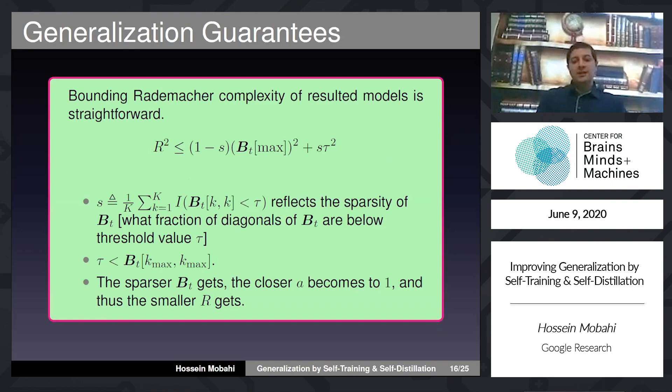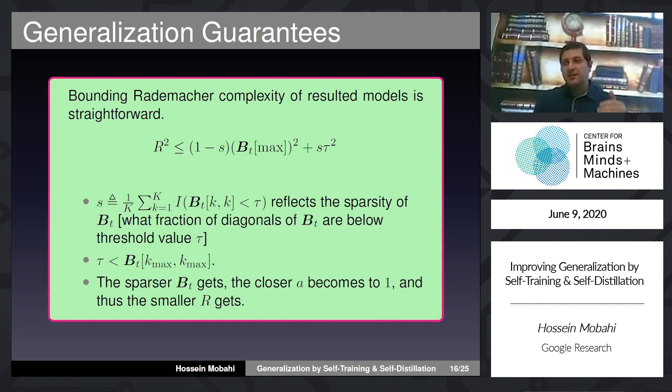You can use this sparsity pattern to come up with generalization guarantees. The high-level idea is that you can bound the Rademacher complexity — a complexity measure of function classes — depending on their sparsity level. Once you have a bound on Rademacher complexity, you can use standard generalization bounds.